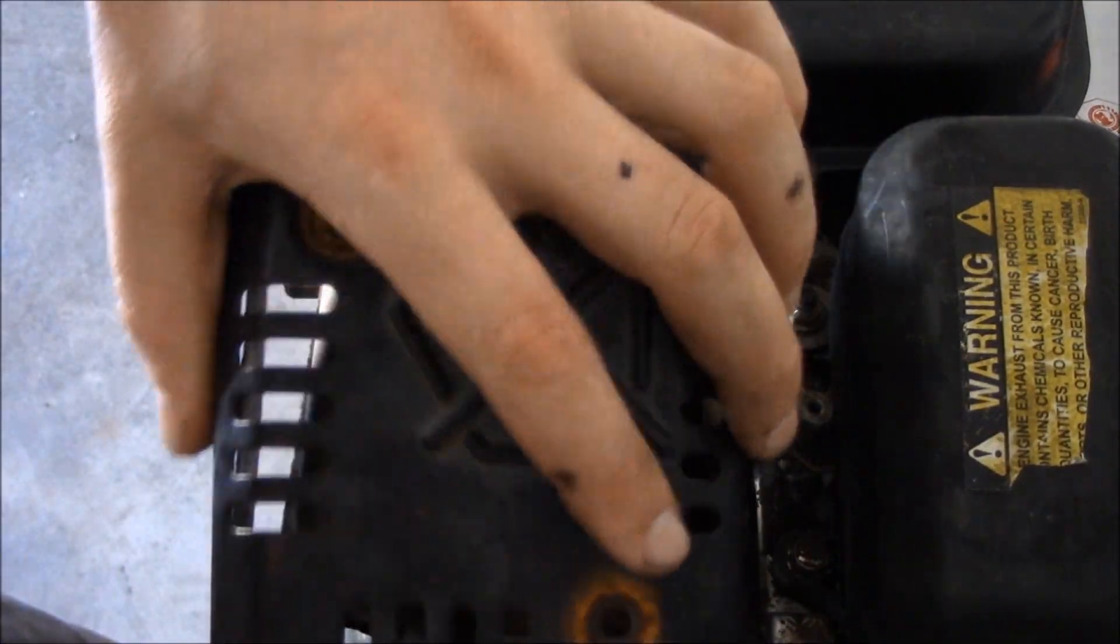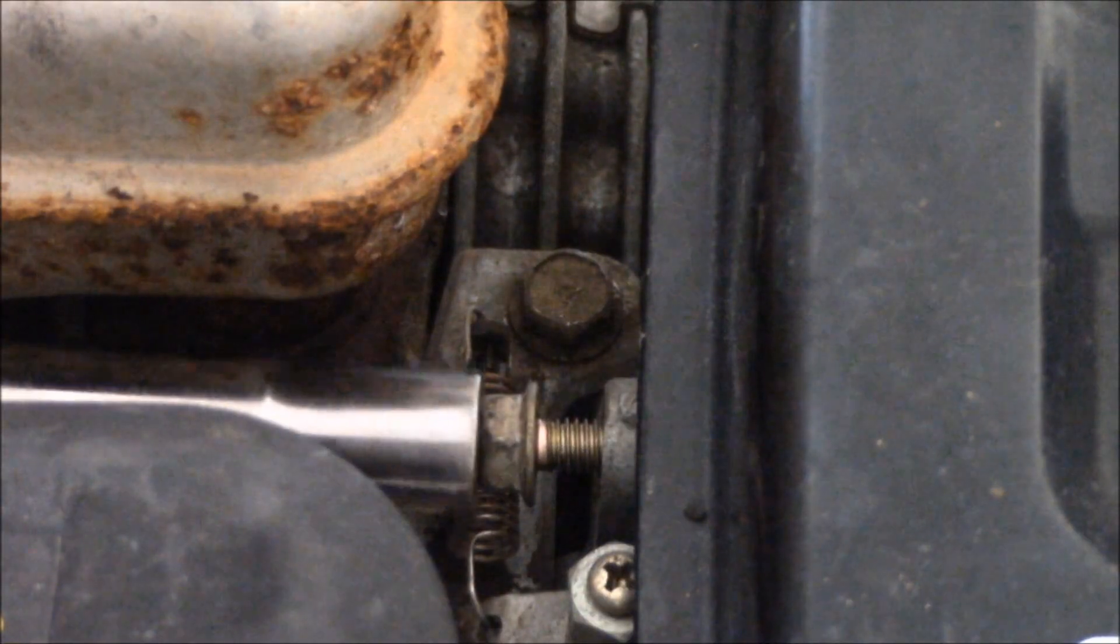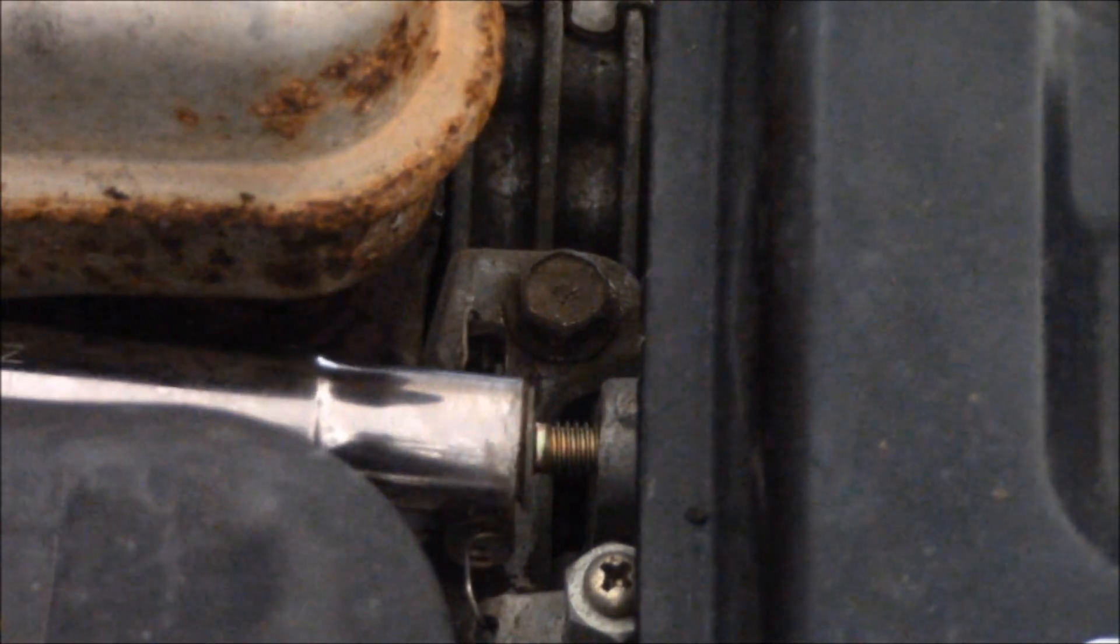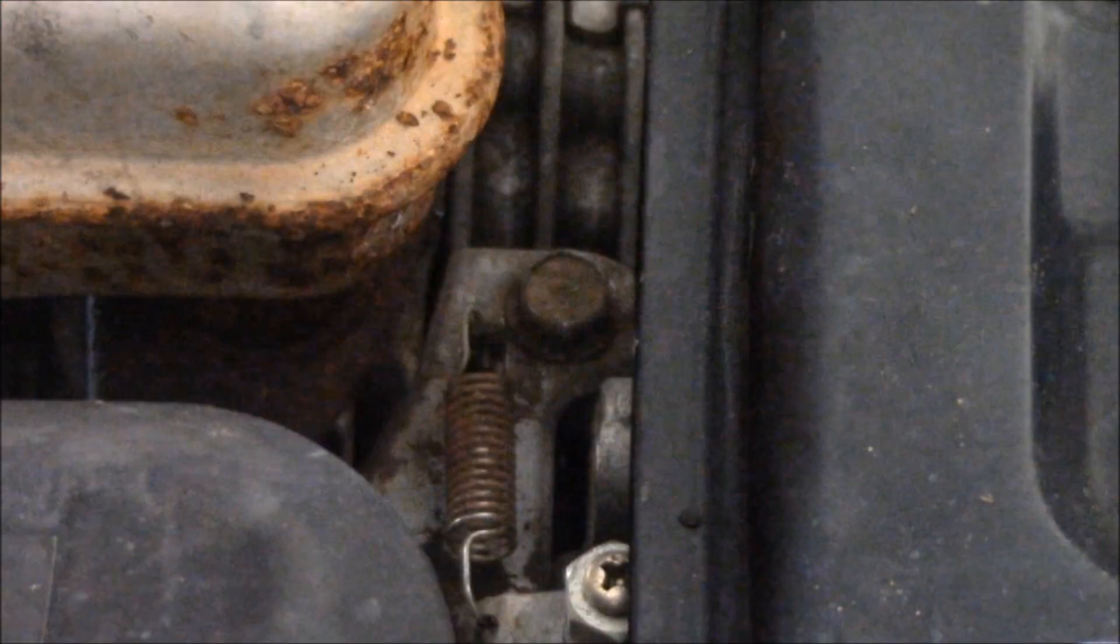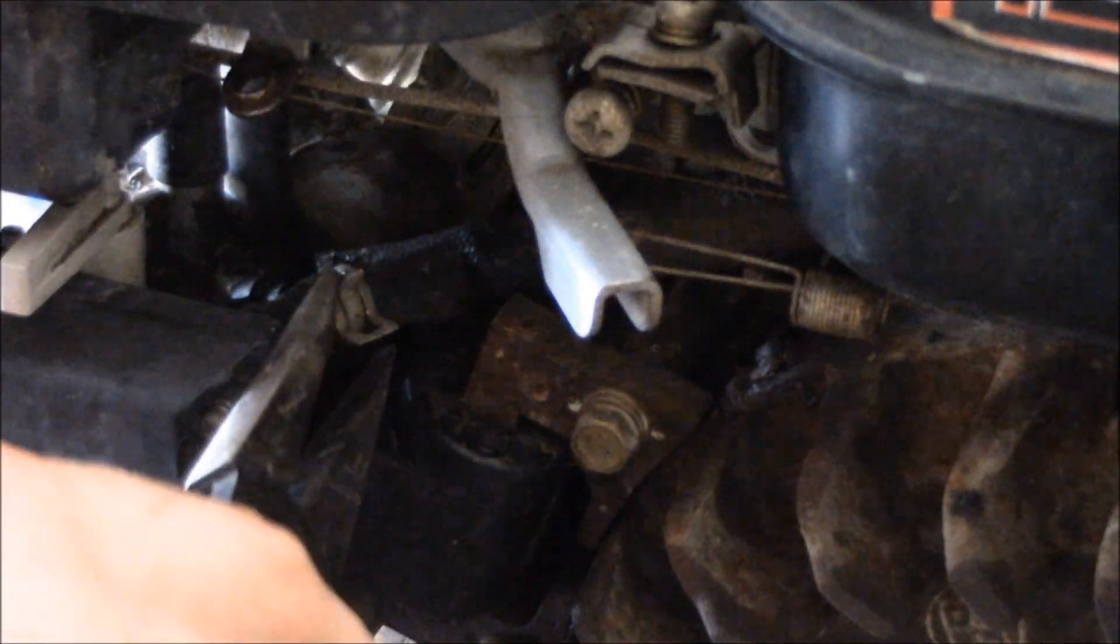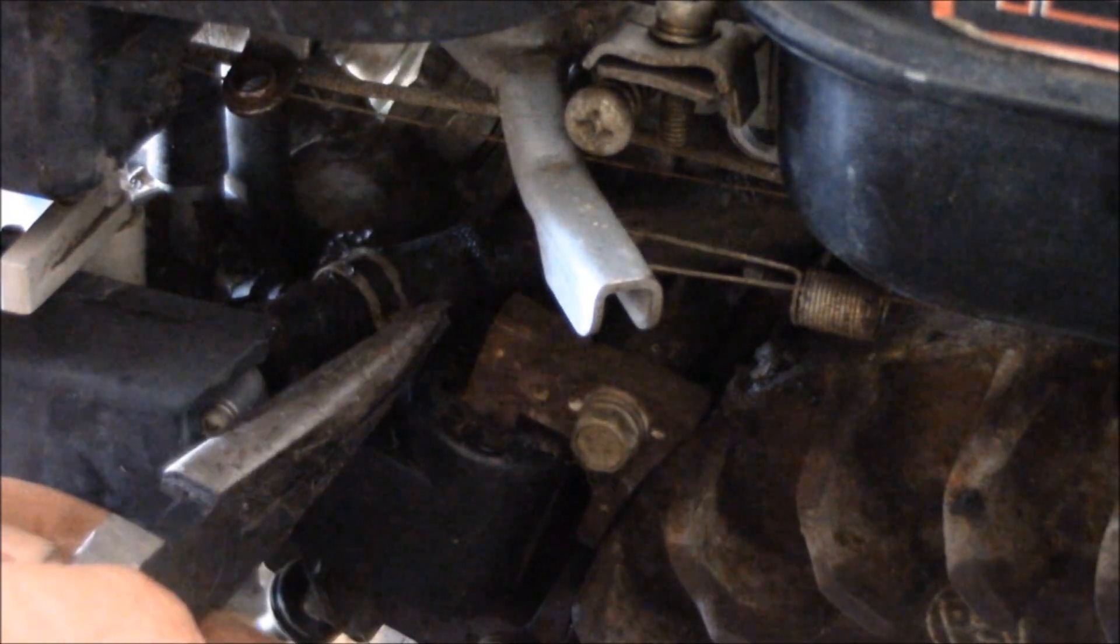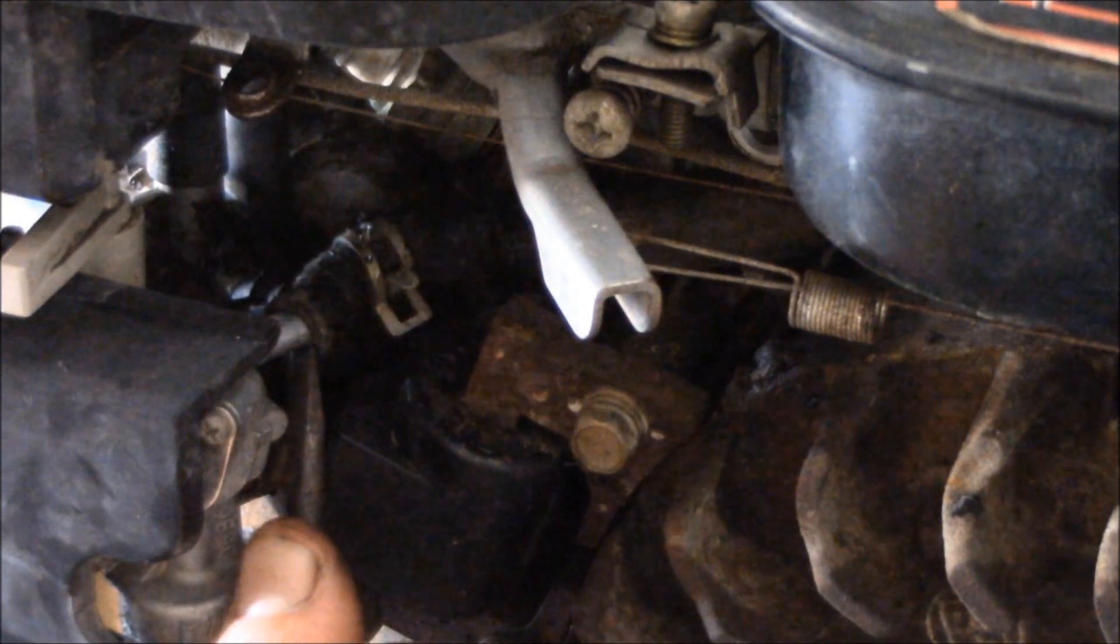So this one was a little tricky to get to, but there are three bolts that hold on the Subaru EX13, EX17, EX21 engine. Sometimes engines have four, but you want to remove those bolts and remove the hose clamp that holds on the fuel line to the carburetor.